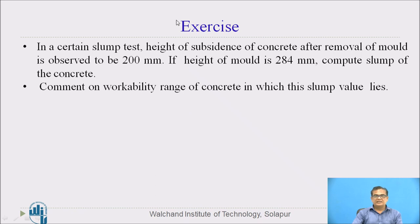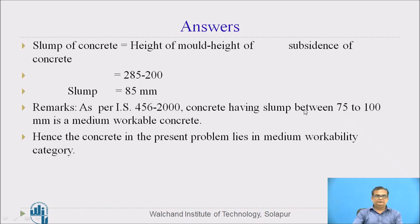Here is one exercise for you. In a certain slump test, the height of subsidence of concrete after removal of the mould is observed to be 200 mm. If the height of the mould is 284 mm initially, calculate the slump of the concrete and comment on the workability range. The slump of concrete equals height of mould minus height of subsidence: 285 minus 200 equals 85 mm. As the slump range is between 75 to 100 mm, this particular concrete comes under the medium workable range — workability is medium.